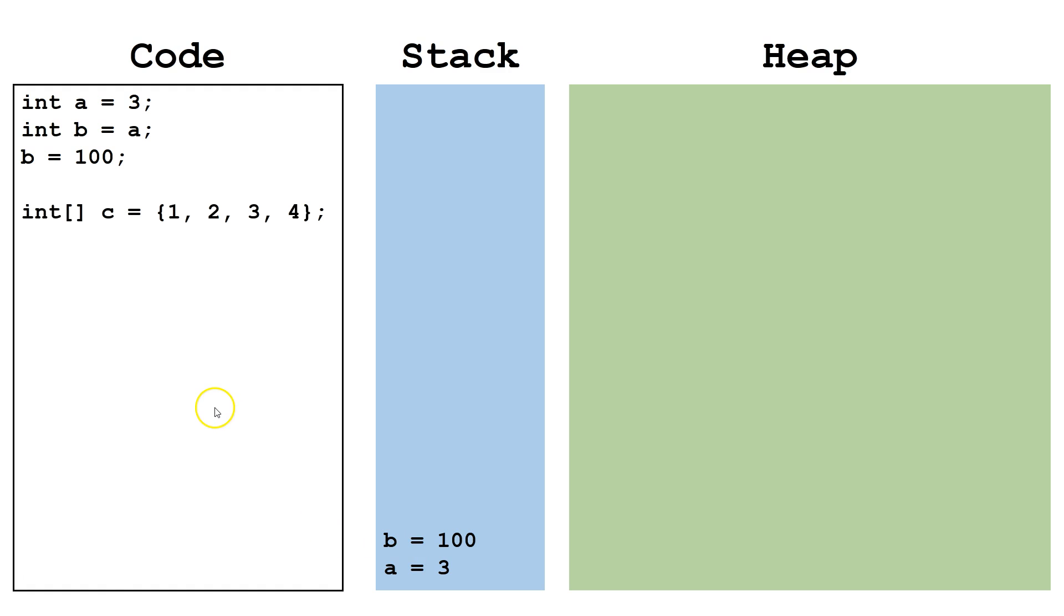Next, we're going to take a look at some reference type variables. C is a reference type variable. We declare C as an integer array. Integer arrays are objects. So on the stack, we set C equal to a pointer to an object on the heap.